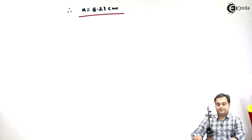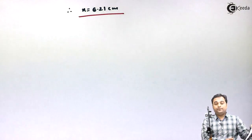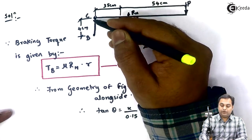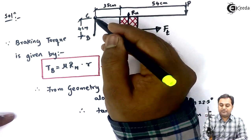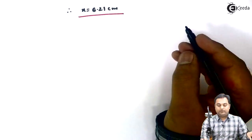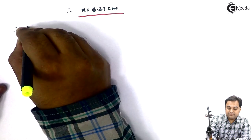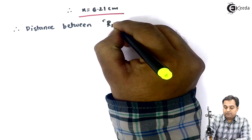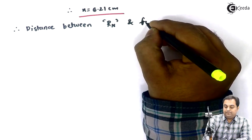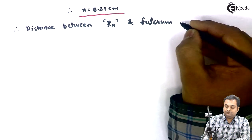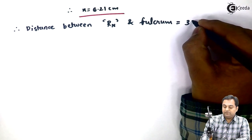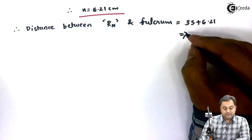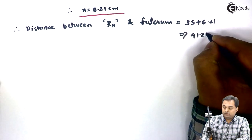After getting X, I can calculate the distance between the normal reaction and point B or C. That distance will be 35 plus X. Therefore, the distance between R_N (normal reaction) and the fulcrum equals 35 cm + 6.21 cm = 41.21 centimeters.